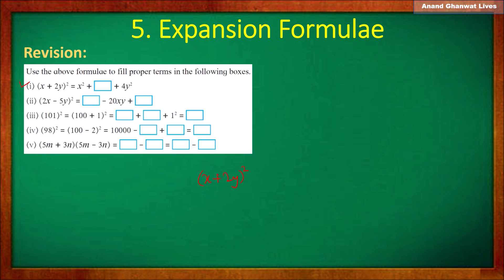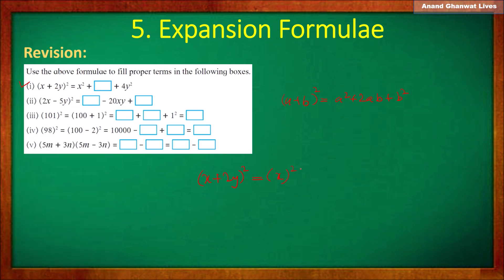Since it is an addition of two terms, we use the formula (a + b)² = a² + 2ab + b². We have to square the first term, which is x, giving x²; then plus 2 times...